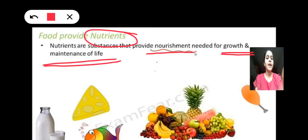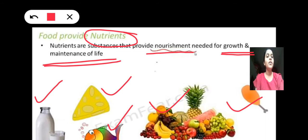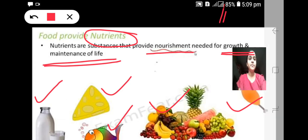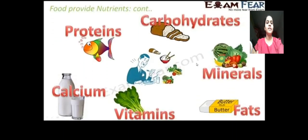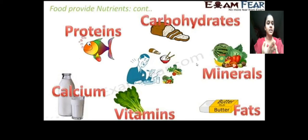Nutrients are present in food items such as milk, cheese, fish, fruits, and meat. The nutrients we have discussed are: carbohydrates, proteins, calcium, vitamins, minerals, and fats.